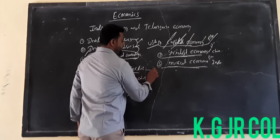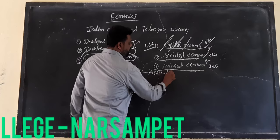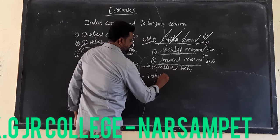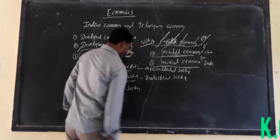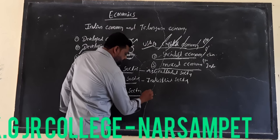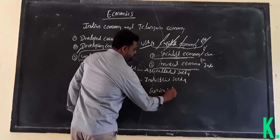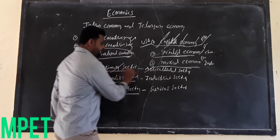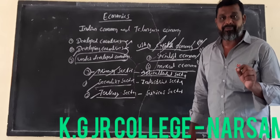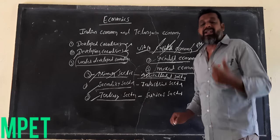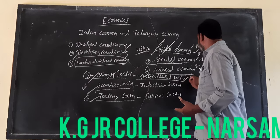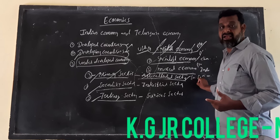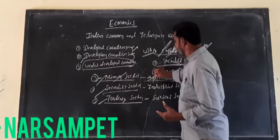The Primary sector means this is the agricultural sector. The primary or agricultural sector includes unsubstituted activities, for example farming, fishing, mining, agriculture, sericulture, forestry, and quarrying, etc. These are called the agricultural sector or primary sector.